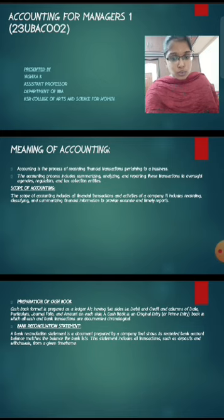We see the preparation of cash book. Cash book form is prepared as a ledger account having two sides, debit and credit, and columns of date, particulars, journal folio and amount on each side. A cash book is an original entry or primary entry book in which all cash and bank transactions are documented chronologically.